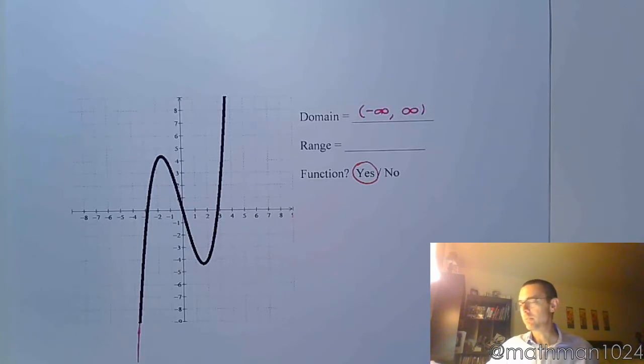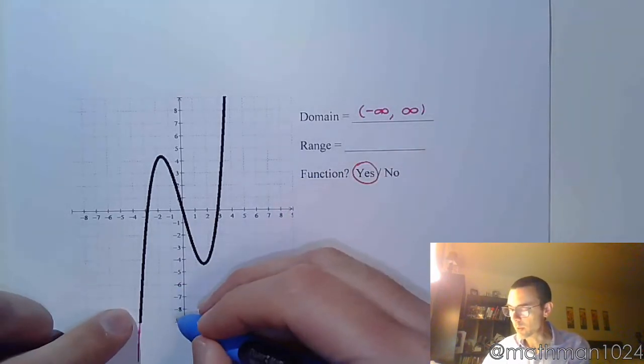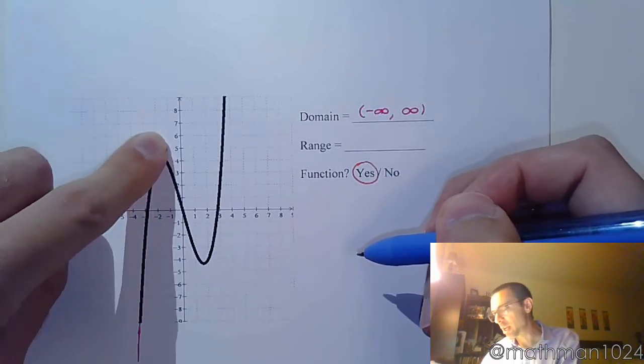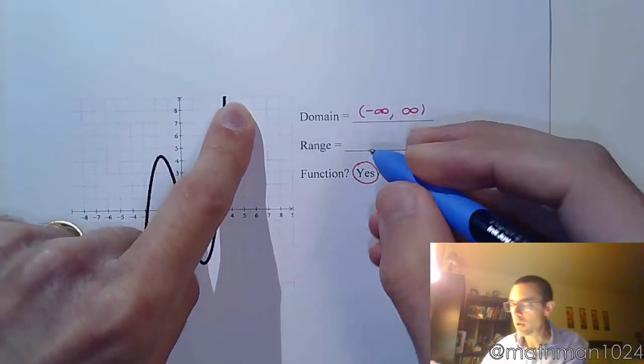The range is a little bit easier to see. Because the range, you see him going all the way down. He may have a hiccup here. But he ends up going all the way up.